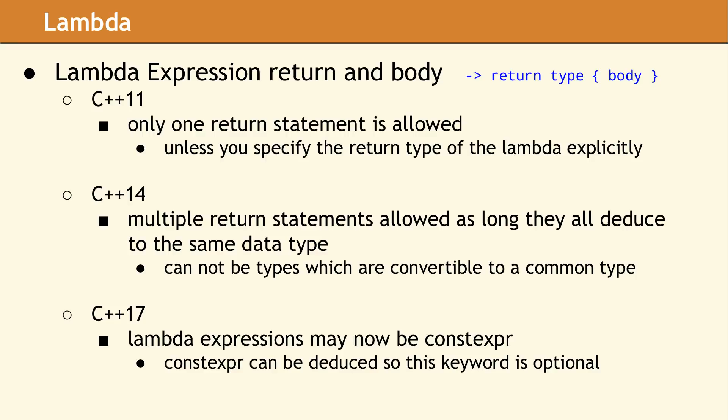In C++17, they added the ability to mark a lambda expression as constexpr. But since constexpr can be deduced as of C++17, you really do not need to mark it with the keyword constexpr. One of the effects of the constexpr keyword is to cause a compiler error if the function or lambda expression cannot be made constexpr.